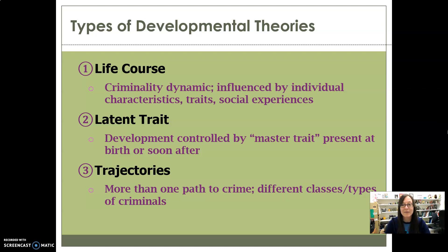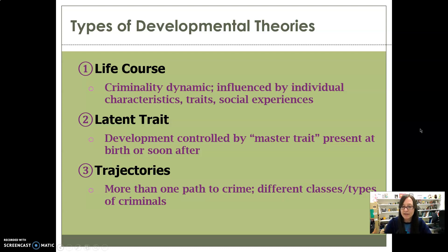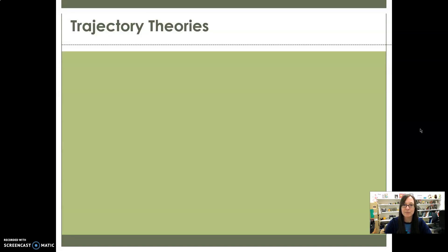When looking at the types of developmental theories, there are three main types: life course, latent trait, and trajectories. This video is going to talk about trajectory theories, which are about how there's more than one pathway to crime, and how you have different classes and different types of criminals.